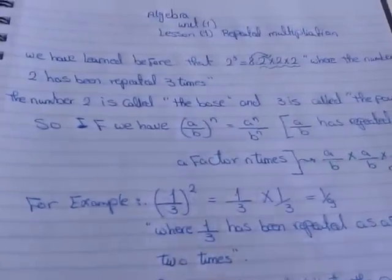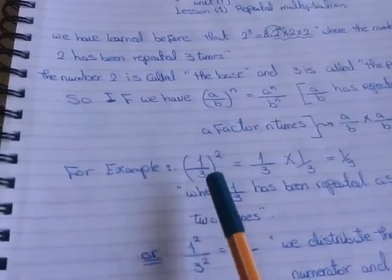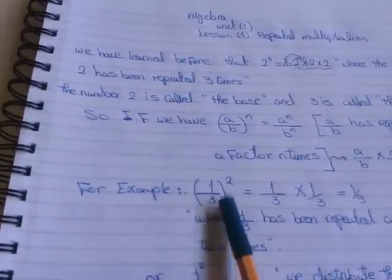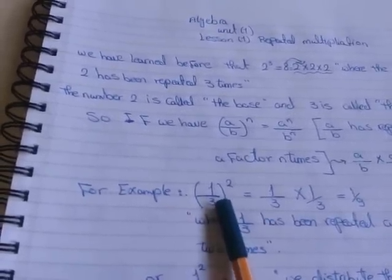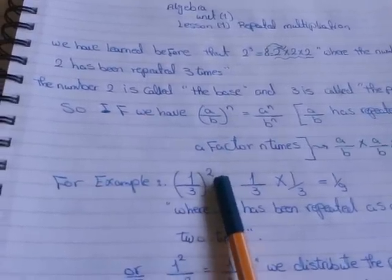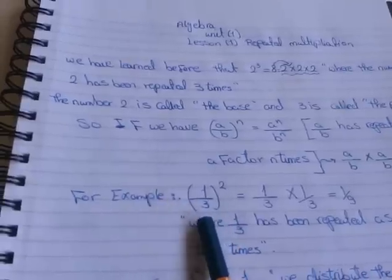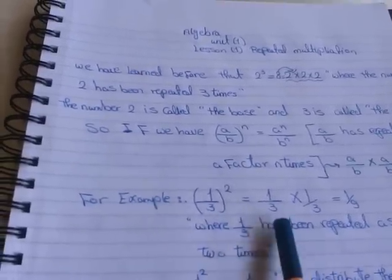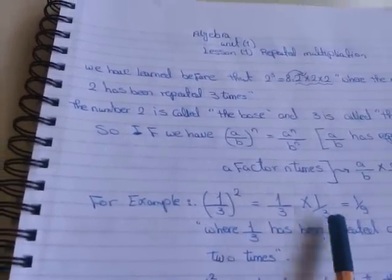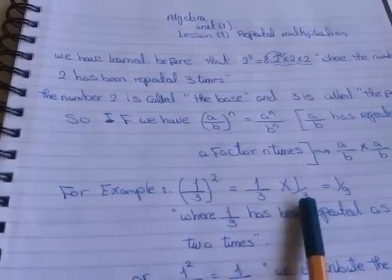Let's see an example. 1 over 3, all to the power 2, means that we repeated 1 over 3 two times: 1 over 3 times 1 over 3. 1 times 1 equals 1, and 3 times 3 equals 9.